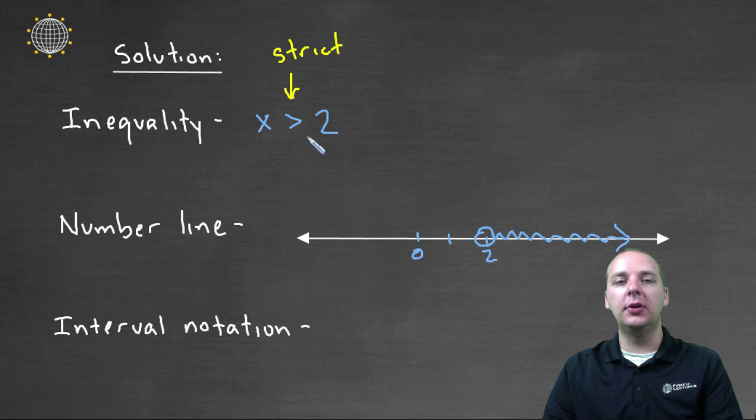But if you get to two exactly, two is not strictly greater than two. So because we can approach right up, right up beside two, but not equal to, we'll do an open circle, and then shade to the right. So this is an alternate way of expressing these solutions.